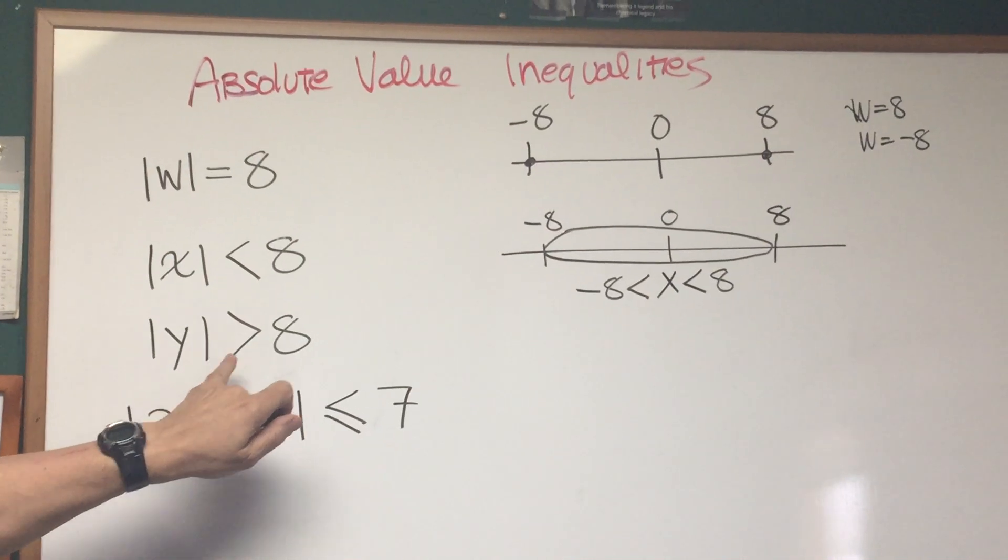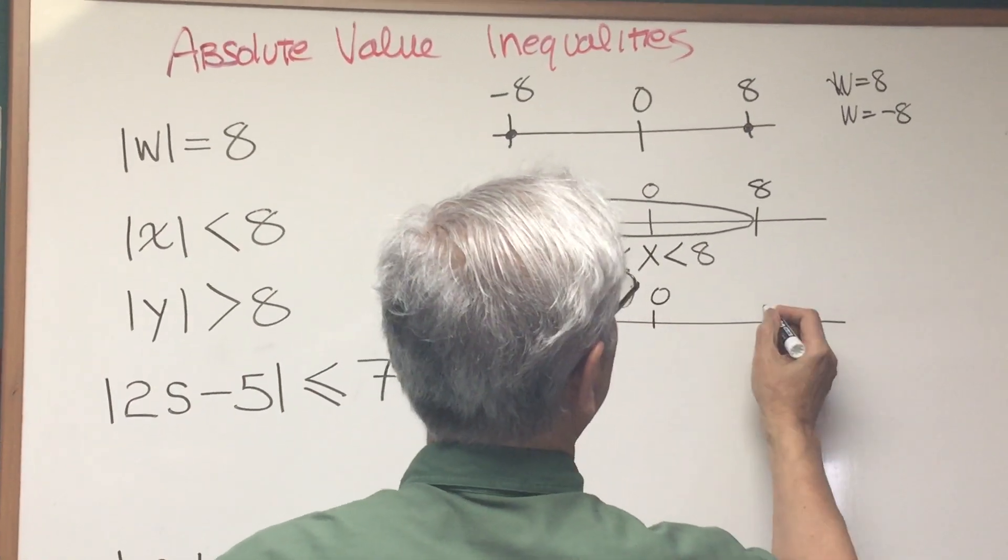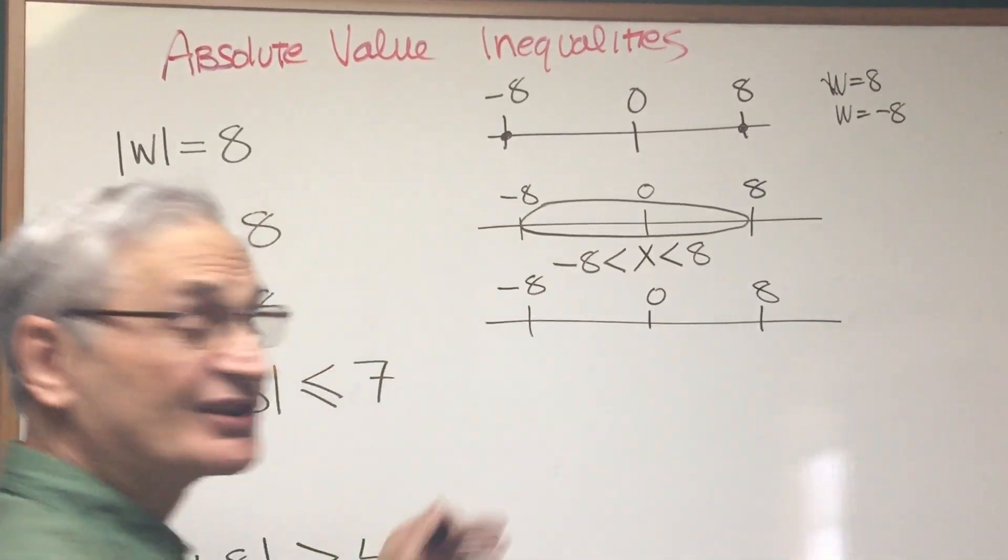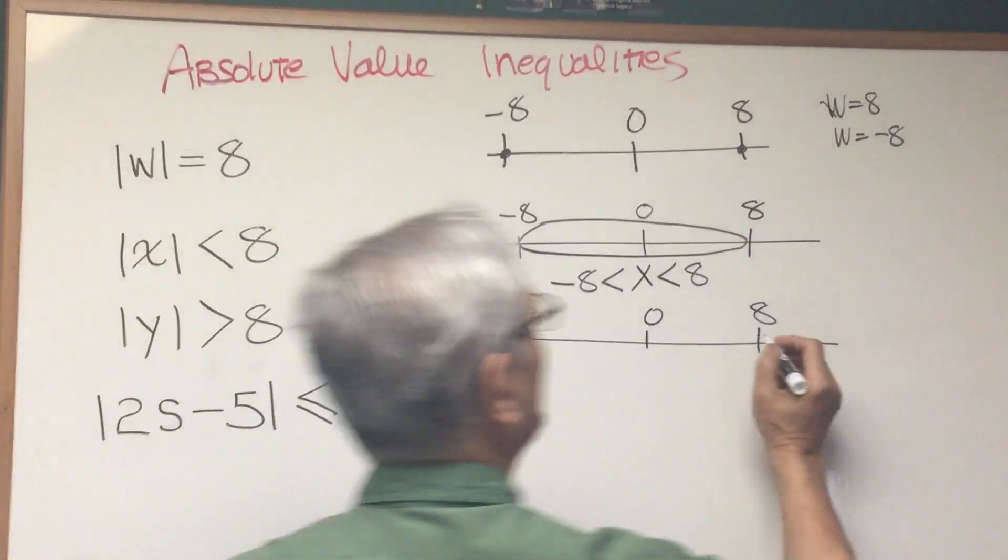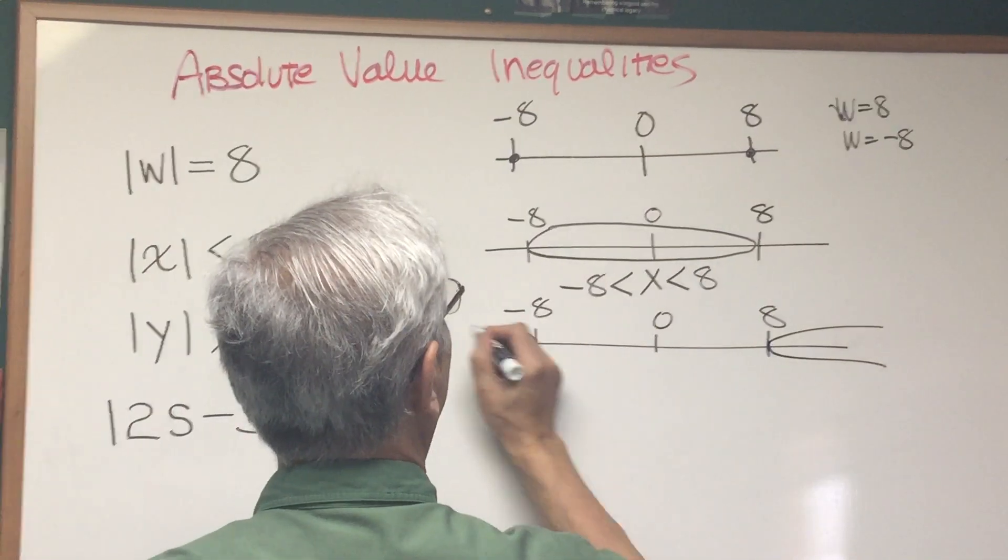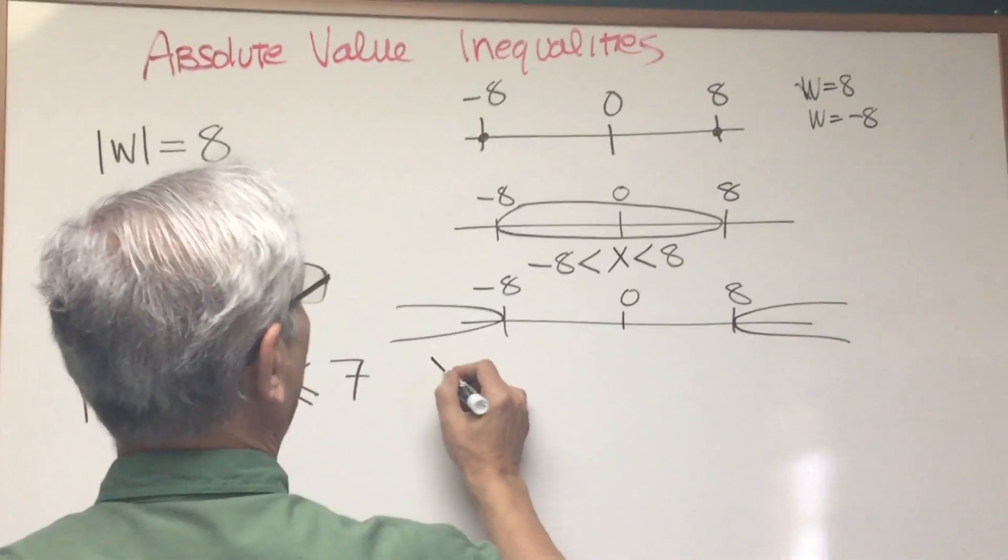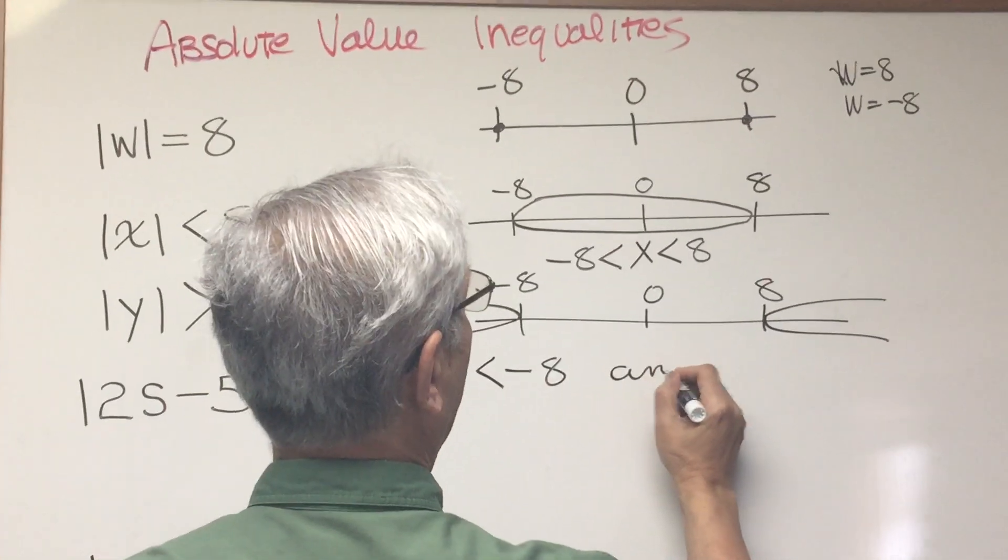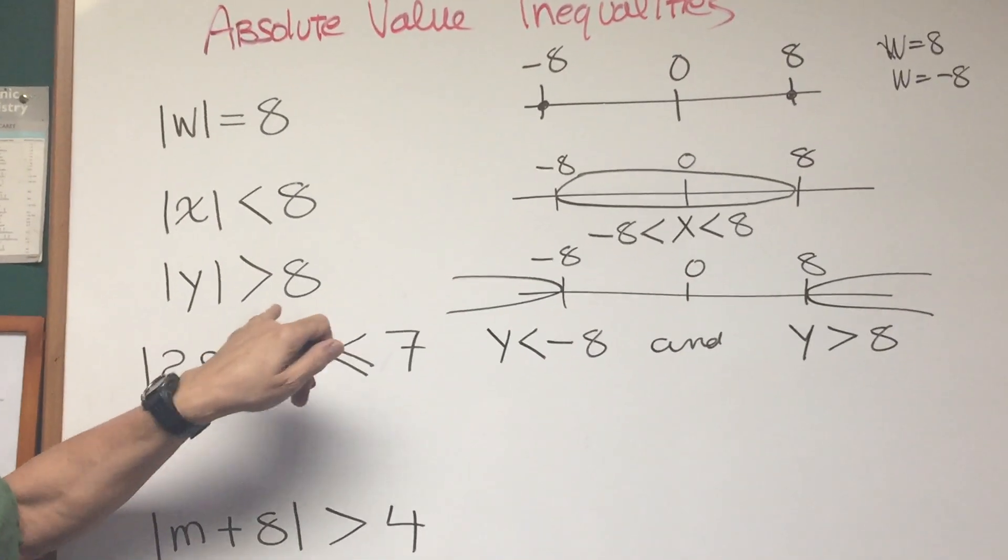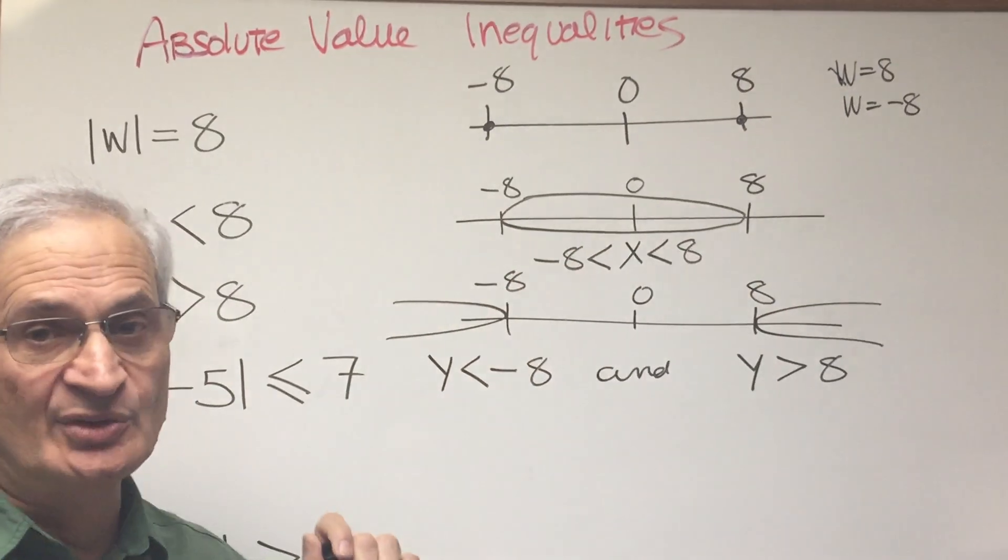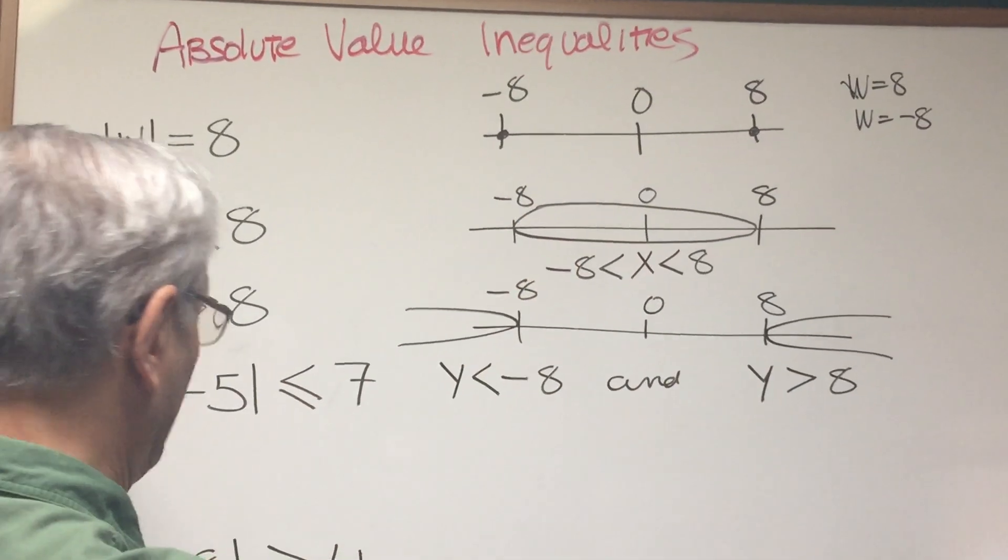Next inequality, the absolute value of y is greater than 8. So what does this mean? This means that the value of y is a distance that's greater than 8 from 0. So what are we looking for? Are we looking for values within that circle, from negative 8 to 8? No, we're looking for values that lie beyond 8 to the right and beyond 8 to the left. So our value for y, our solutions for y, are going to come in two parts. It's going to be y is less than negative 8 and y is greater than 8. It's a discontinuous interval. There's no way we can express the solution to this inequality as one continuous interval. It must be broken down into two intervals because it's distance greater than, in both the positive and the negative direction.